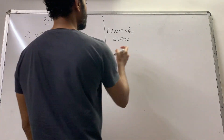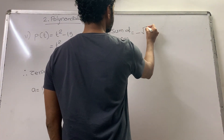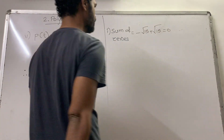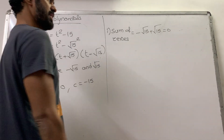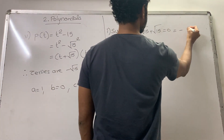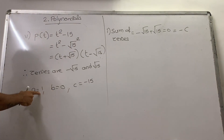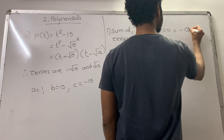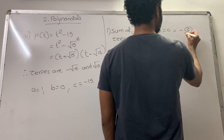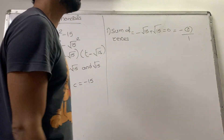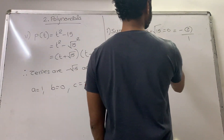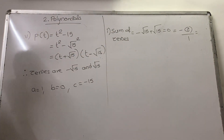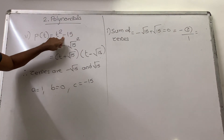Sum of zeros: we know the sum of zeros is −B/A. Our zeros are −√15 and +√15. The sum of −√15 and +√15 is 0. We have to show this equals −B/A. B = 0 and A = 1, so −B/A = −0/1 = 0. We have shown that the sum of zeros equals −B/A, which in words is: minus coefficient of t upon coefficient of t².